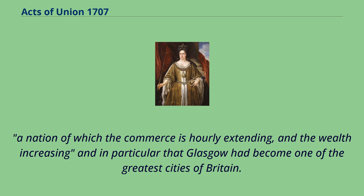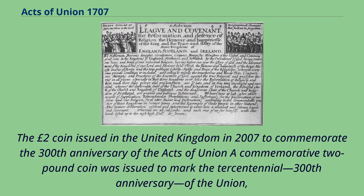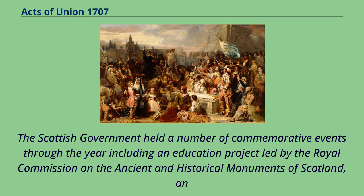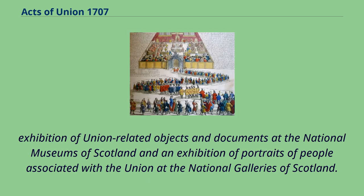A commemorative two-pound coin was issued in the United Kingdom in 2007 to mark the 300th anniversary of the Acts of Union, which occurred two days before the Scottish Parliament general election on May 3, 2007. The Scottish government held a number of commemorative events through the year, including an education project led by the Royal Commission on the Ancient and Historical Monuments of Scotland, an exhibition of Union-related objects and documents at the National Museums of Scotland, and an exhibition of portraits of people associated with the Union at the National Galleries of Scotland.